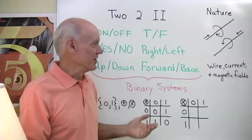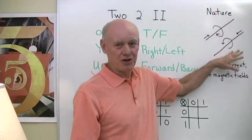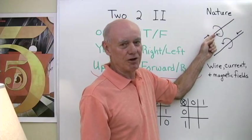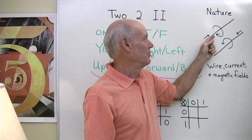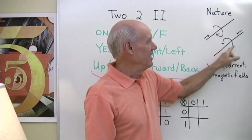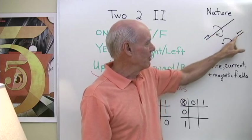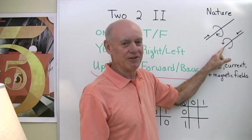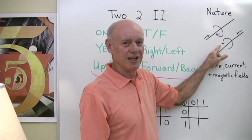Now in nature we have something similar and that's this. This just occurs naturally. If we have a wire and we pass an electric current through the wire, that current will induce a magnetic field around the wire that points in a certain direction. If we send the electric current through the wire in the other direction, it also forms a magnetic field but that magnetic field goes in the other direction.